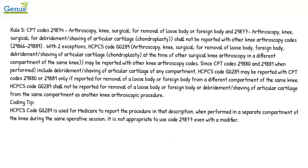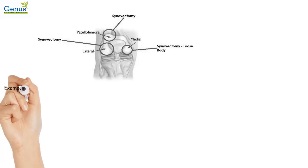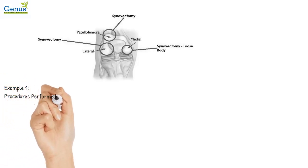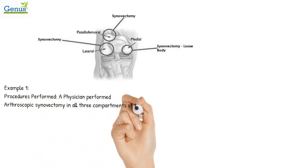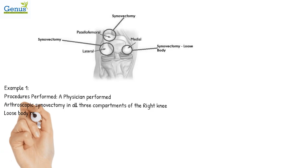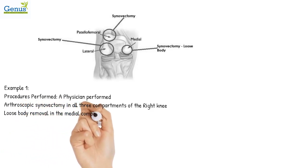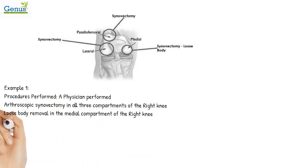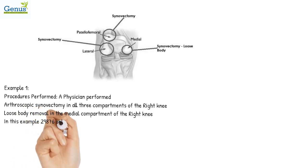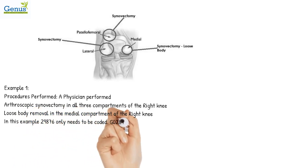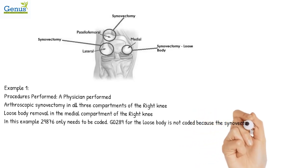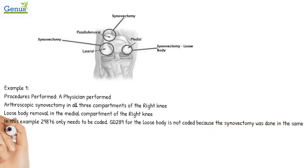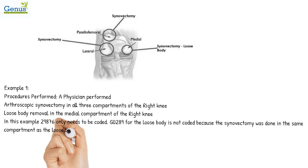Example 1: A physician performed arthroscopic synovectomy in all three compartments of the left knee, and loose body removal in the medial compartment of the left knee. In this scenario, we will only code 29876. HCPCS code G0289 for removal of the loose body will not be coded here, because the physician is also performing synovectomy in the medial compartment along with the loose body removal, so it is not coded separately.